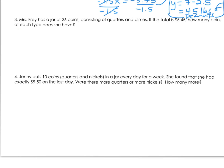Coin problems are very popular in a system of equations. Mrs. Fry has a jar of 26 coins consisting of quarters and dimes. If the total is $5.45, how many coins of each type does she have? We have two types of coins, quarters and dimes, so let's have two variables. I'll just go x and y again, but you can use q and d if you'd like to match with the terms you're solving for. We're looking for the amount of each type of coin, so I'm going to say x equals number of quarters, and y is number of dimes.